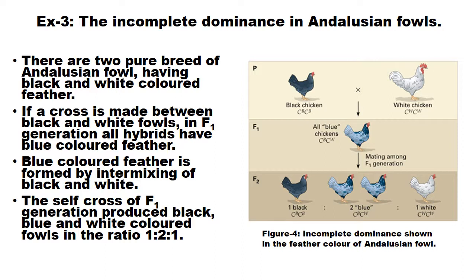This is another example of incomplete dominance found in Andalusian fowls. There are two pure breeds of Andalusian fowl having black and white colored feathers. If a cross is made between black and white fowls, in F1 generation all hybrids have blue colored feathers. Blue color is formed by intermixing of black and white. The self-cross of F1 generation produces black, blue, and white colored fowls in the ratio of 1:2:1.